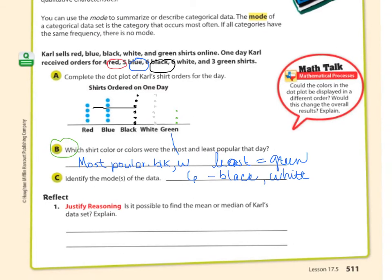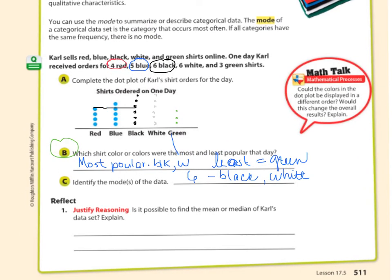Is it possible to find the mean or median of Carl's data set? Sure we can. The numbers we would add together are four, five, six, six, and three. To find the median, we'd have to put those numbers in order first: three, four, five, six, six. Then let's find the middle one. Our median is five.